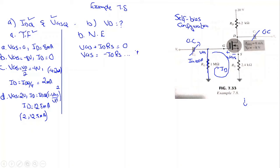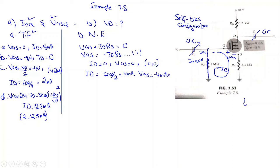This is the network equation. When ID = 0, VGS = 0 — so the first point is (0, 0). When ID = IDSS/2 = 4 milliampere, VGS = −4 mA × 2.4 kΩ = −9.6 volt. So the second point is (−9.6 V, 4 mA). We now have all points needed to plot both curves.